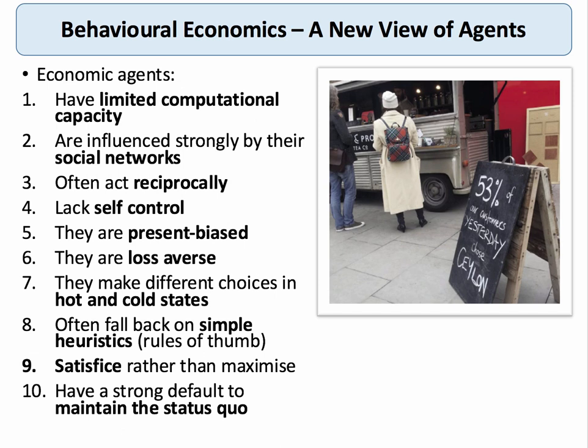People think more about the immediate future than the future that lies a long way ahead. We've talked in the previous webinar about people being loss-averse — people tend to hate losses more than commensurate gains. People also tend to make different choices when they're in a hot emotional state compared to when they're in a cold reasoned state. They fall back on simple rules of thumb and they tend to satisfice rather than maximize. Fundamentally, people have a very strong default to maintain the status quo — inaction is often the preferred path of choice.